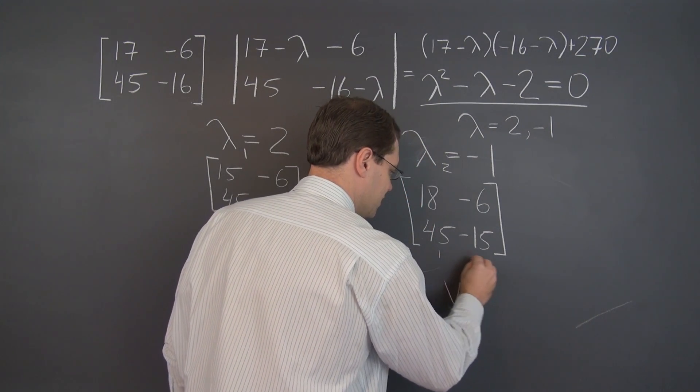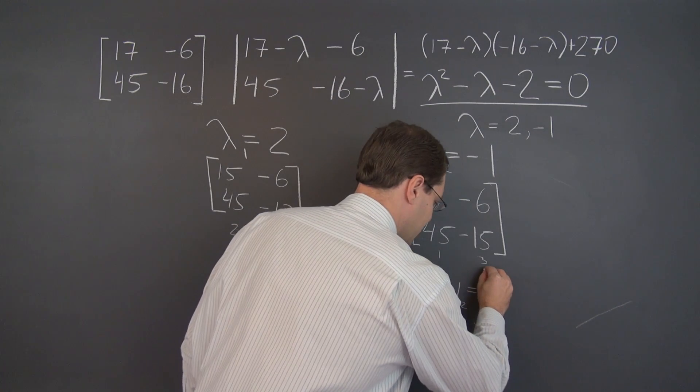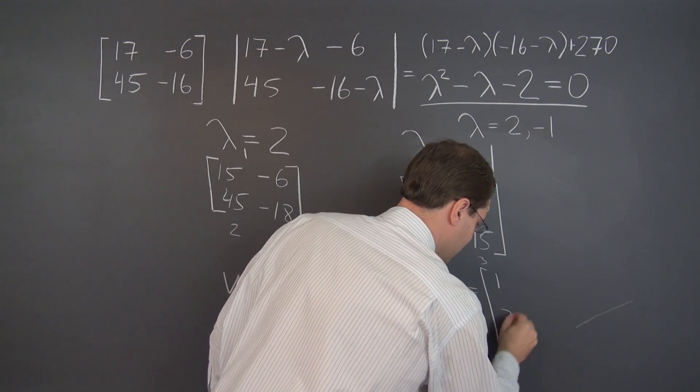And these are very clearly in proportion 3 to 1. So the corresponding eigenvector is, well, let's be careful, [1, 3]. So 1, 3.